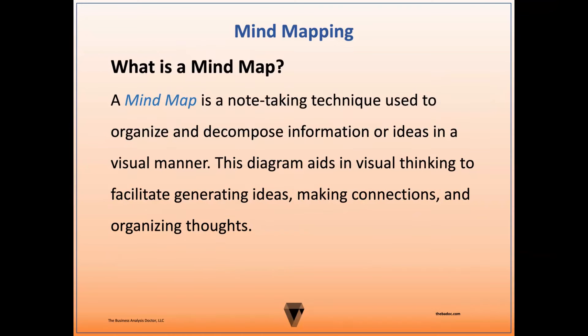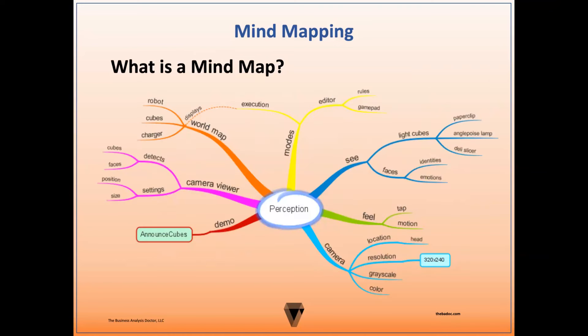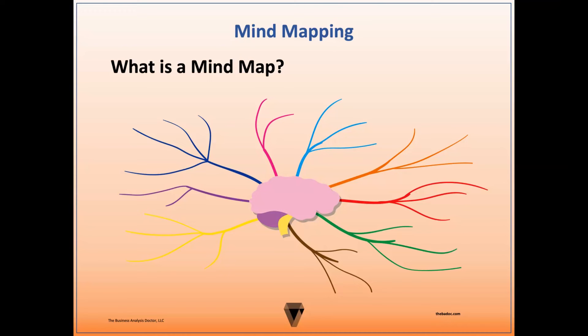So what is a mind map? A mind map is a note-taking technique that's used to organize and decompose information or ideas in a visual manner. This diagram aids in visual thinking to facilitate generating ideas, making connections, and organizing thoughts. Mind mapping is also a powerful learning technique because it captures information in a manner similar to the way the human mind processes information — by decomposing a central topic and then categorizing and making connections between the various subtopics and elements.